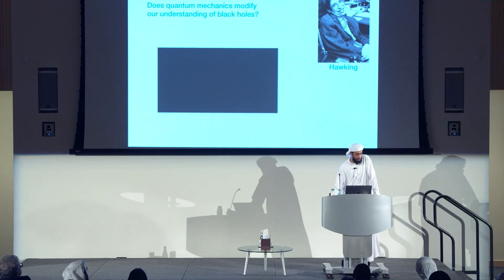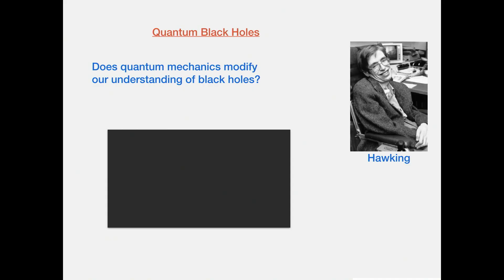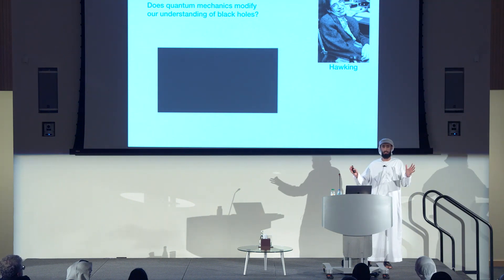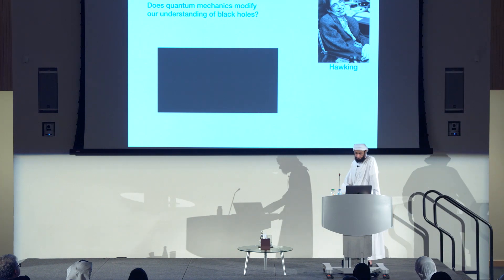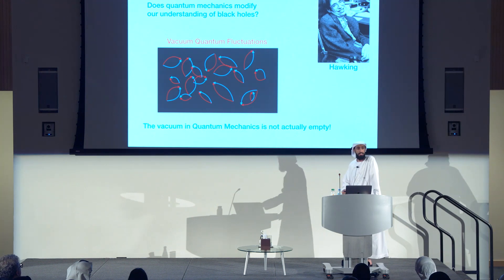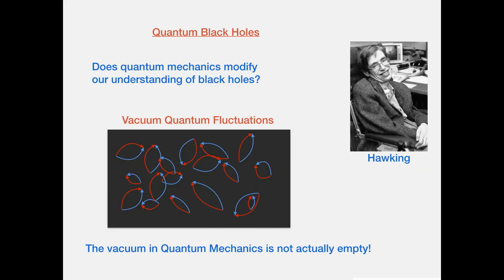A pioneer in this field is Stephen Hawking, who asked: how would quantum mechanics change our picture of black holes? He noted that in classical physics, without quantum mechanics, the vacuum is truly empty — there is nothing there. But if you include quantum mechanics, there are actually quantum fluctuations: particles can appear and disappear in the vacuum. A blue and red particle appears from nothing, and then they annihilate, going back to nothing. This is not merely a theoretical abstraction — it has been checked experimentally.